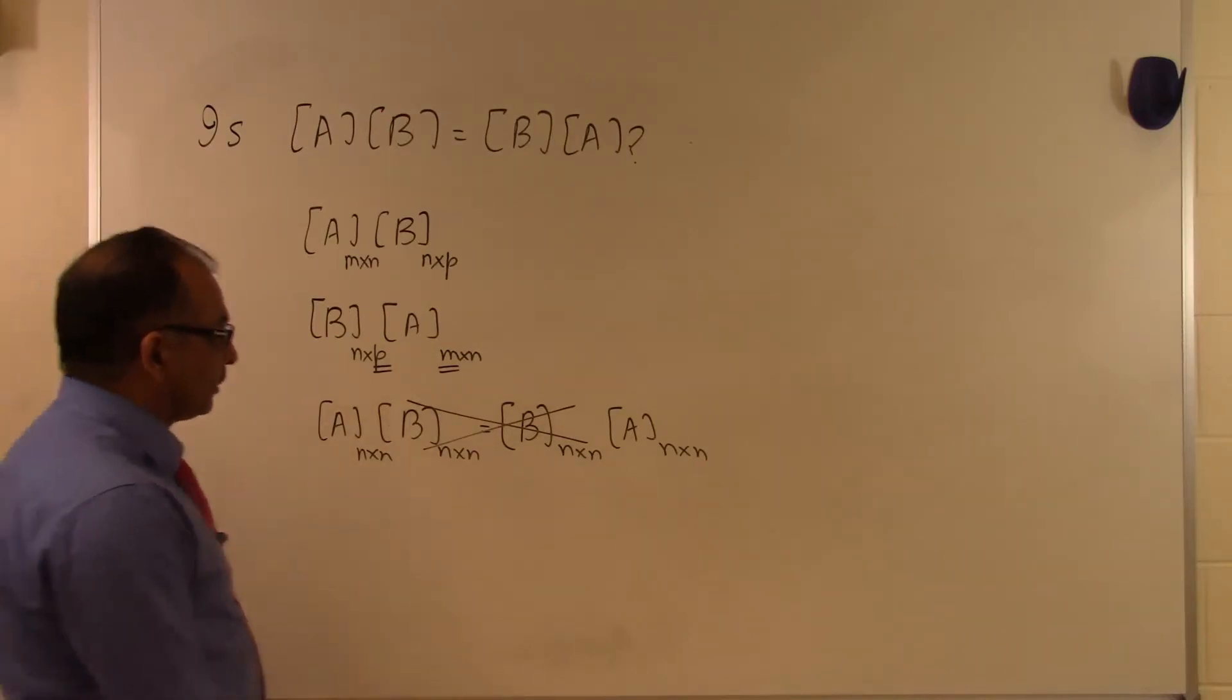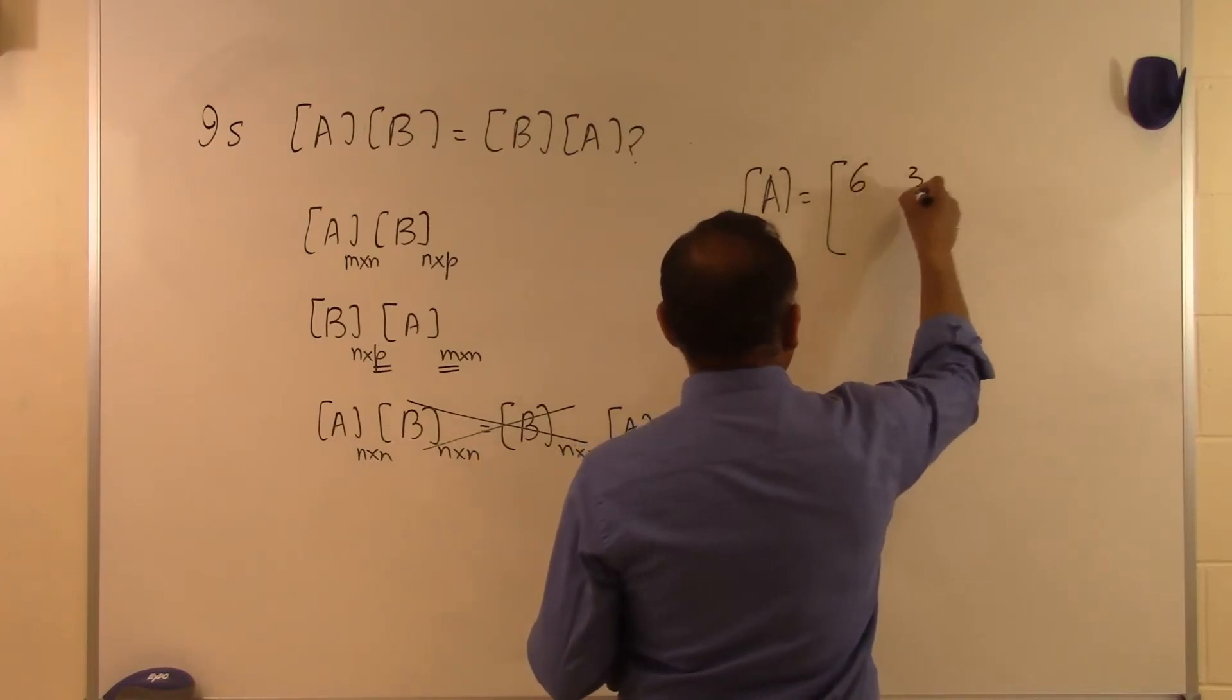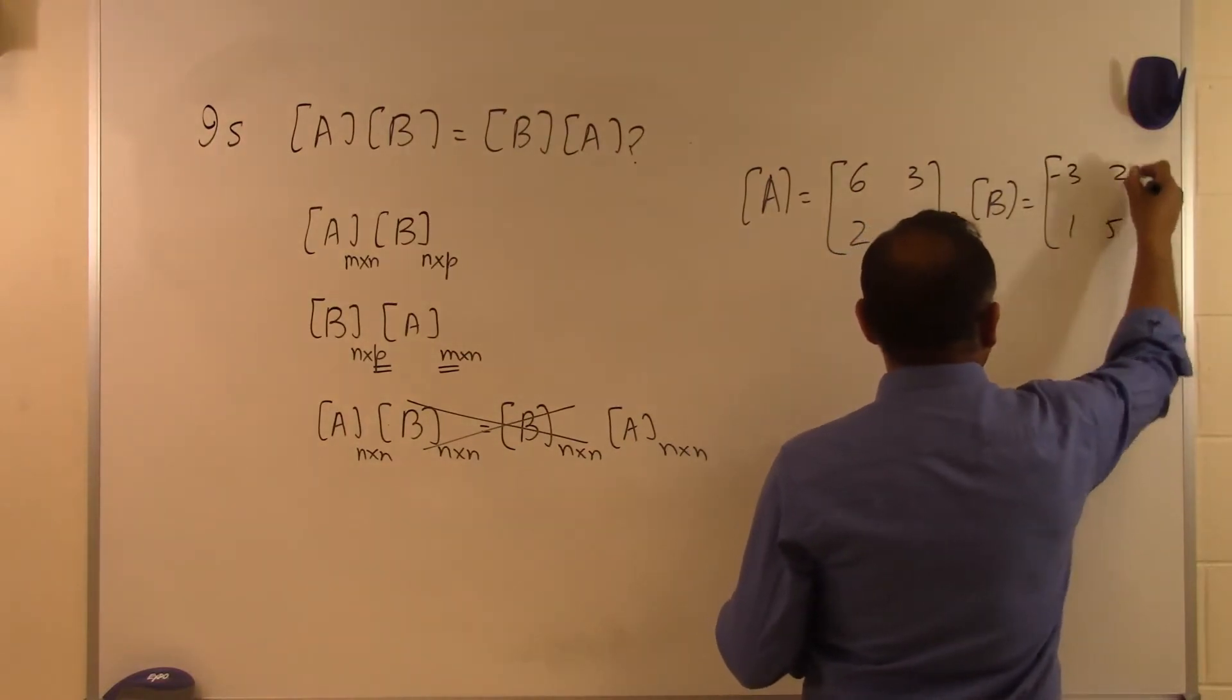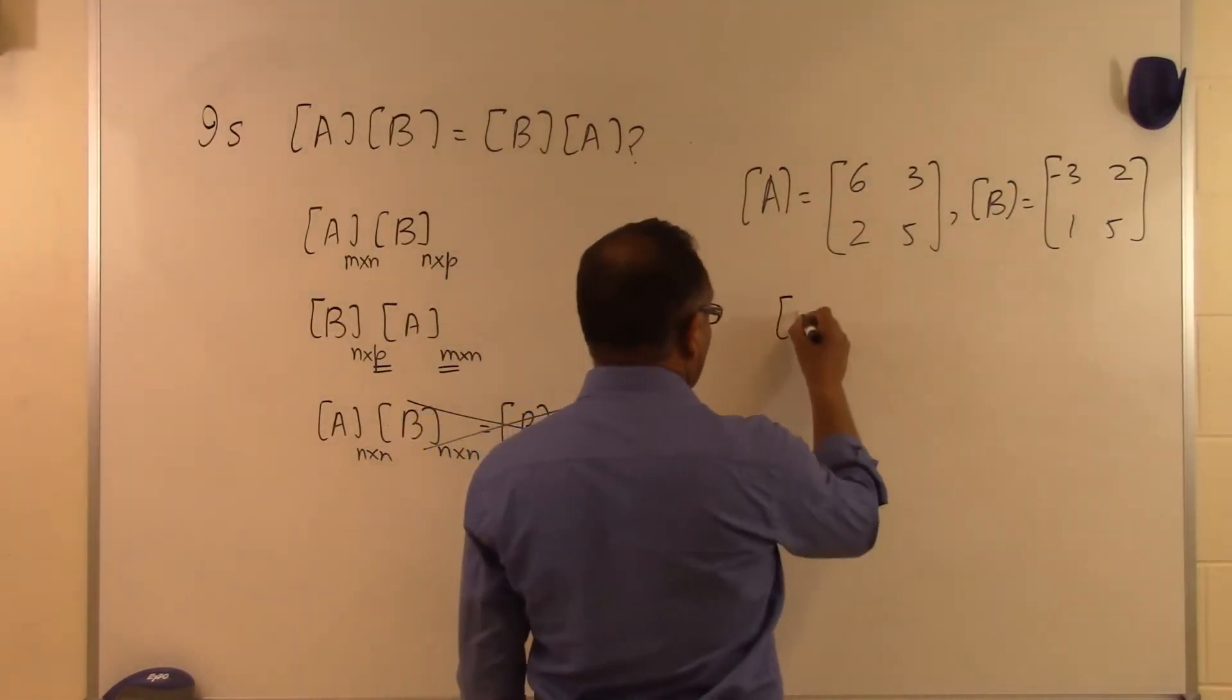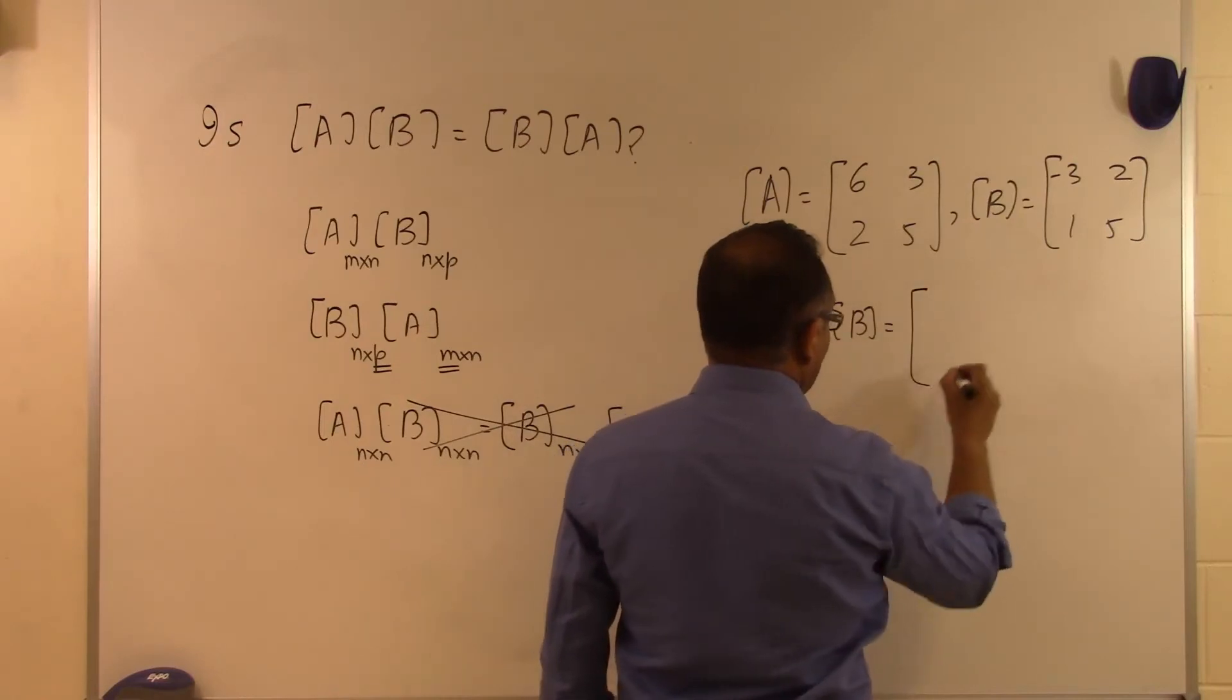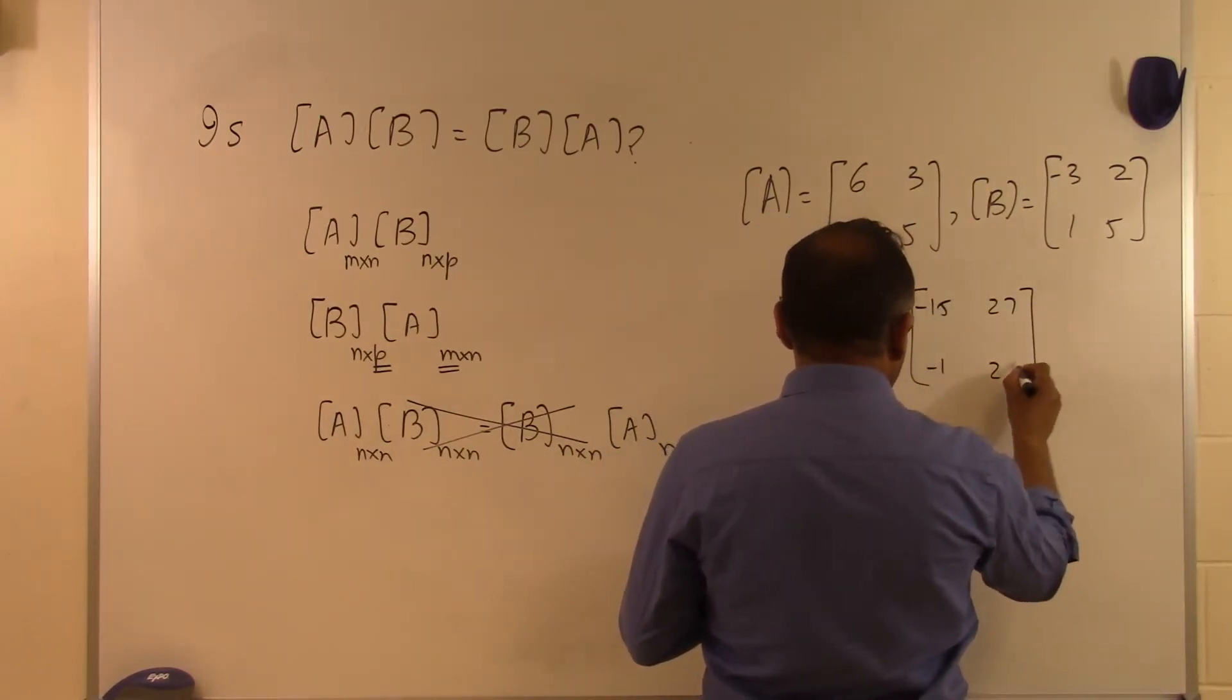Let's take an example. If we have A given as [6, 3; 2, 5] and B given as [-3, 2; 1, 5], we've got these two matrices here. A times B is allowed because the number of columns here is the same as the number of rows here. If we do the matrix multiplication, we get [-15, 27; -1, 29].